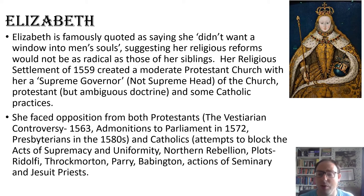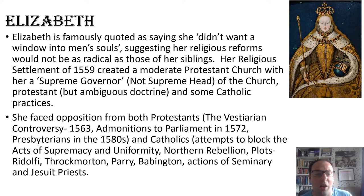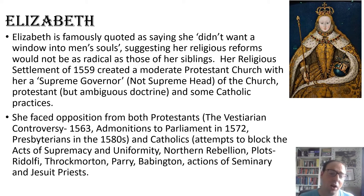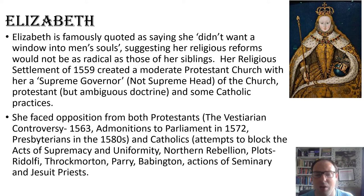She faced opposition from Protestants as well as Catholics. We see the Vestiarian Controversy, essentially an argument from some of the clergy about whether they should wear what they saw as Catholic vestments when delivering services. There were the Admonitions to Parliament in 1572, arguing that Elizabeth's reforms had not gone far enough. We've got Presbyterians who wanted to do away with church structures, in particular bishops, and we see a rise of Puritans in the 1580s. Catholics attempted first to block the Acts of Supremacy and Uniformity, and we actually see a load of Catholic bishops locked in a room to stop them voting on it at one point.